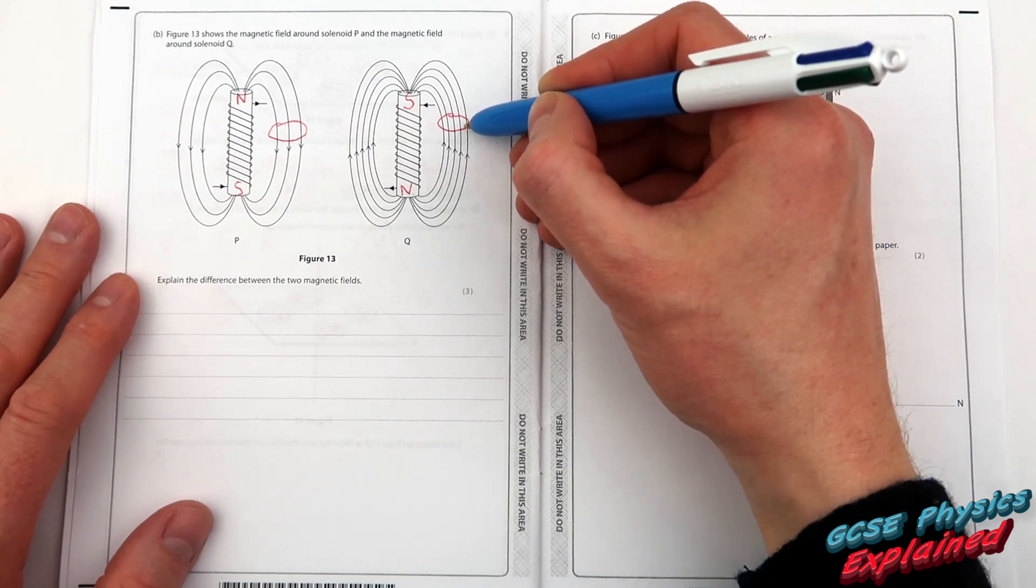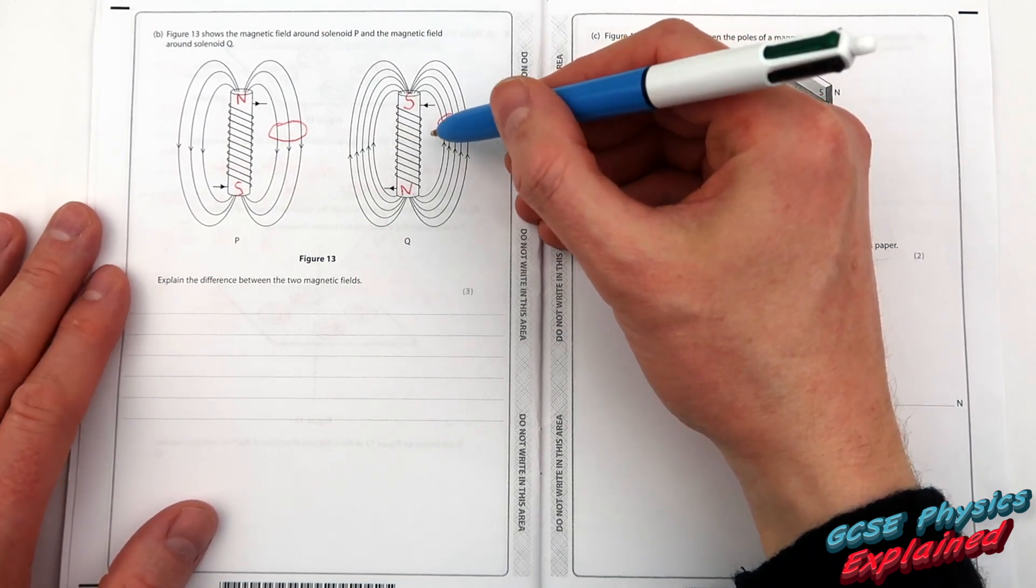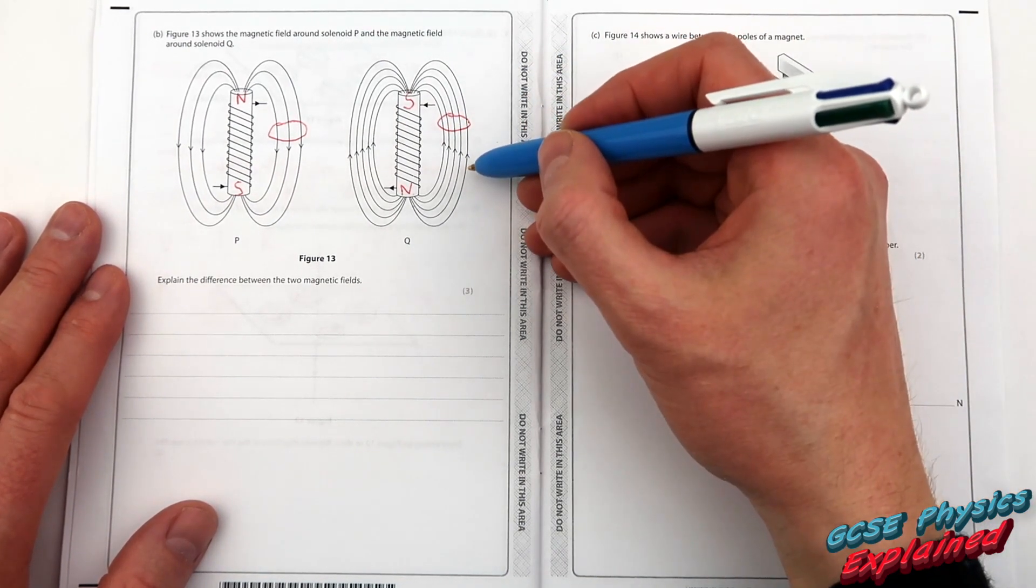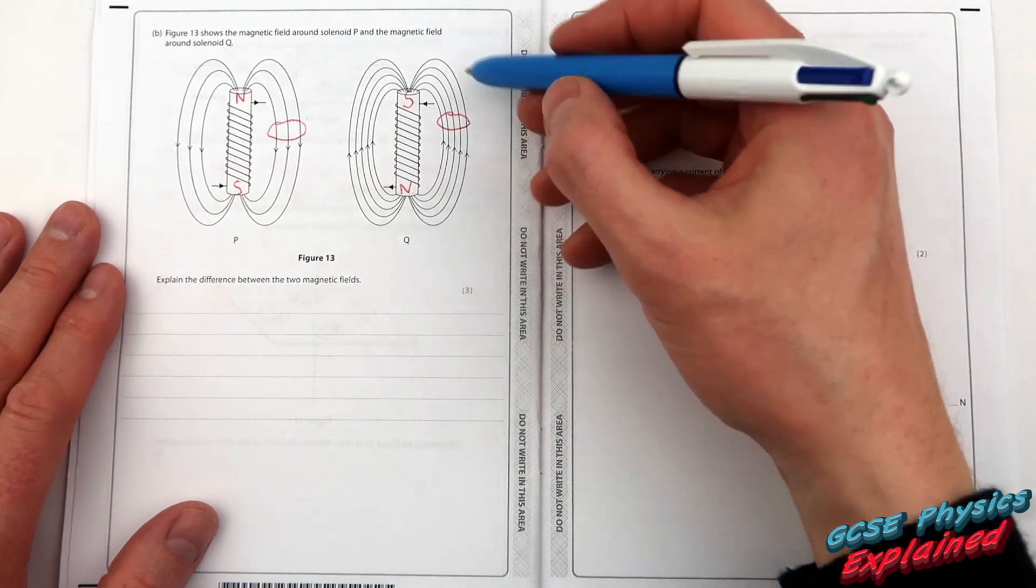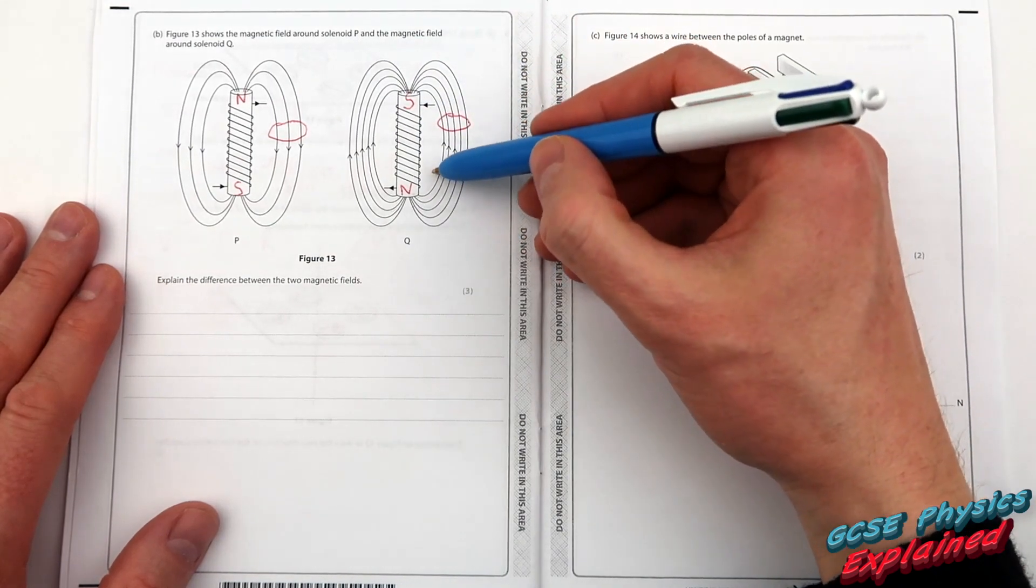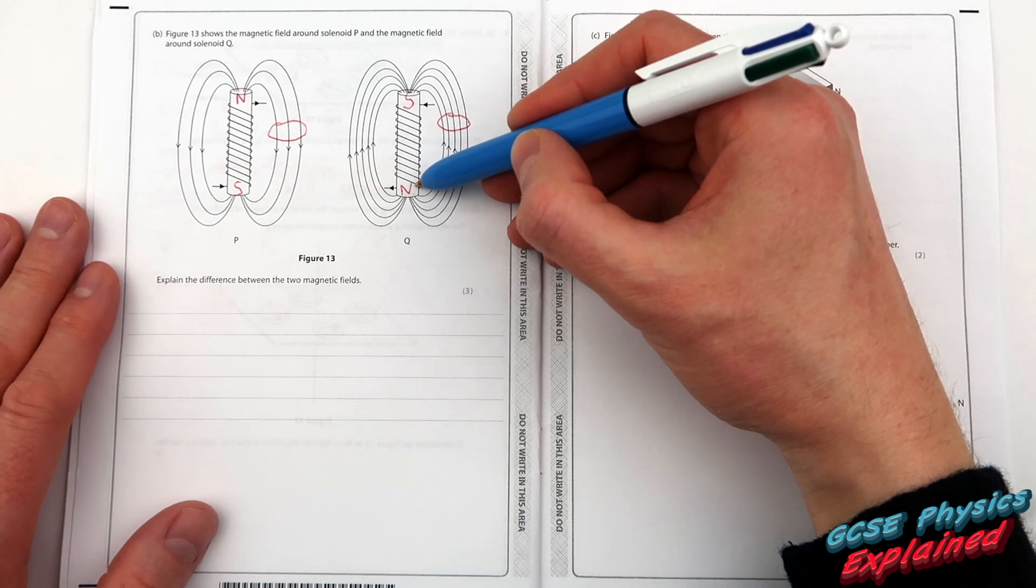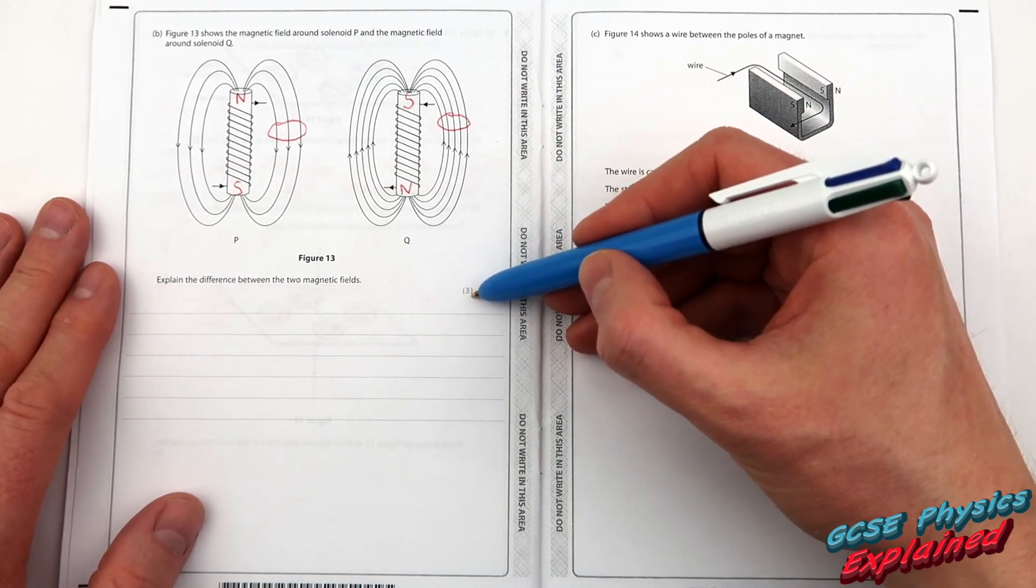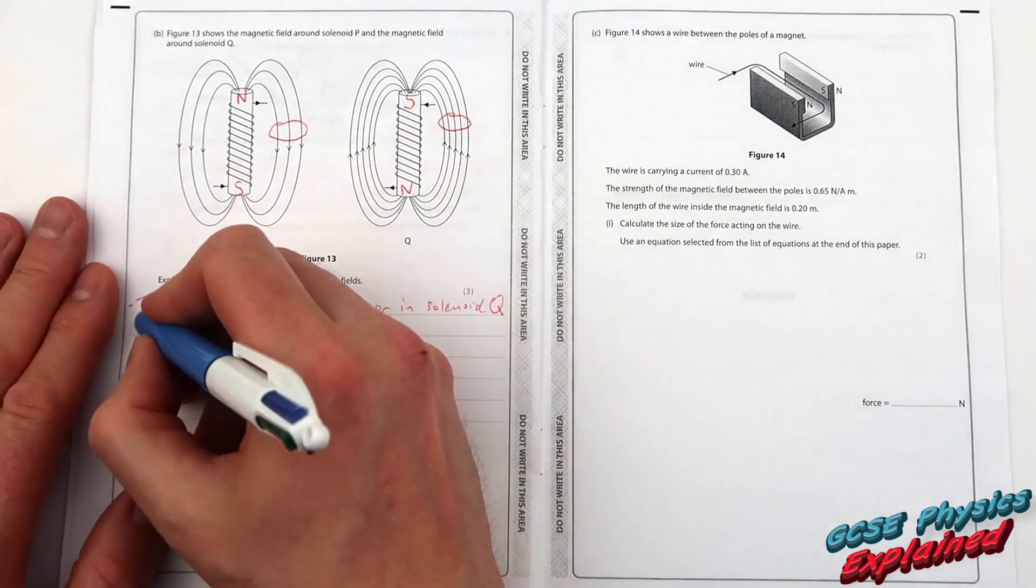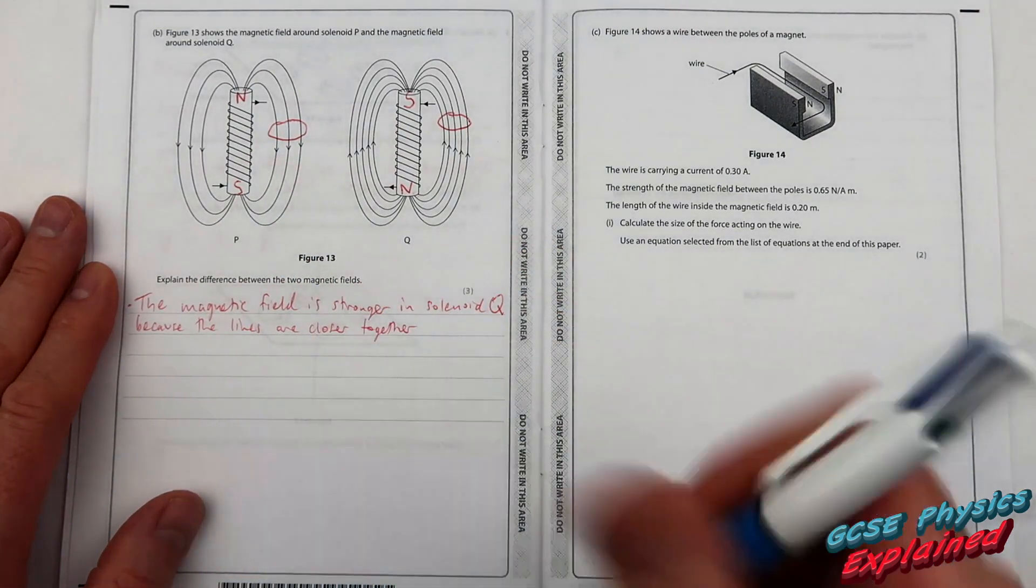If the lines are close together it means the magnetic field is stronger. Again I've got a lovely video on magnetism. Click the link above if you want some more help to do with magnetism. Now since this is electromagnetism the strength of the magnetism is caused by the strength of the current. So what we can assume is it's got the same number of coils on each of these solenoids so therefore this must have more current. Coil Q has got more current going through it. And that's worth three marks and that's what we've covered. By lines what I mean is magnetic field lines.